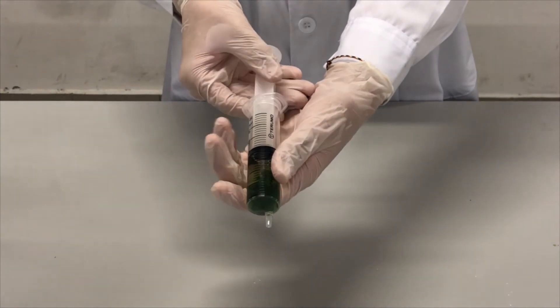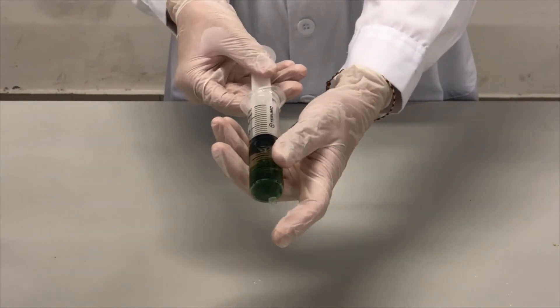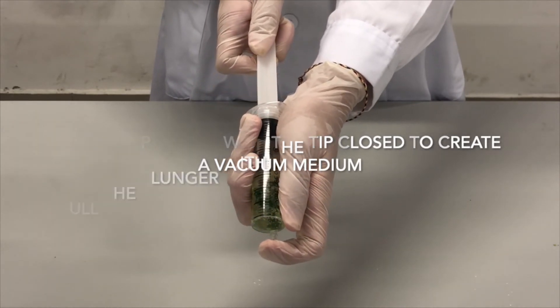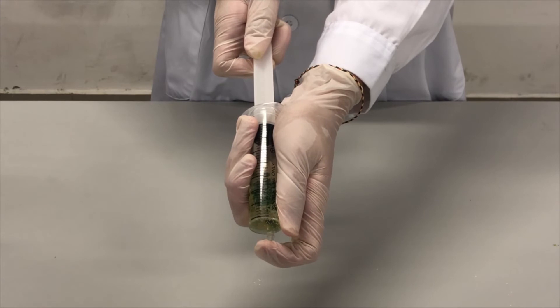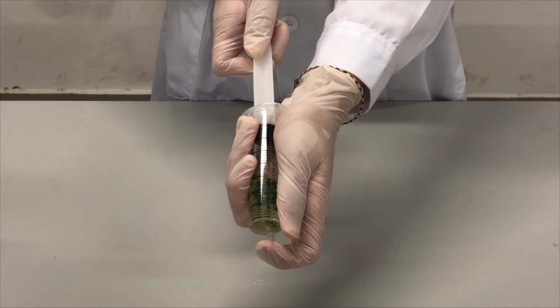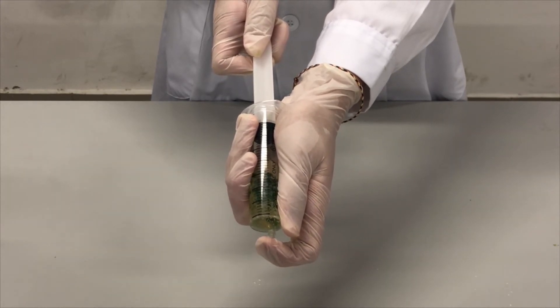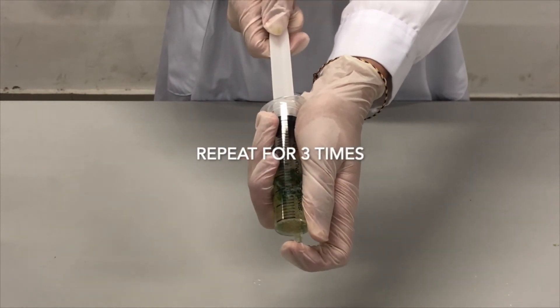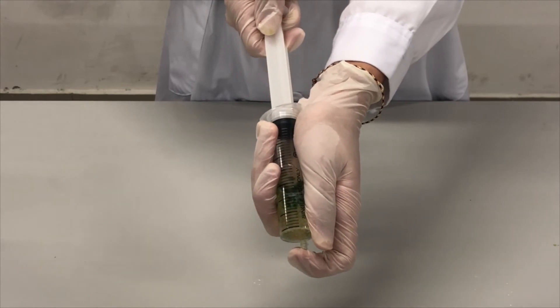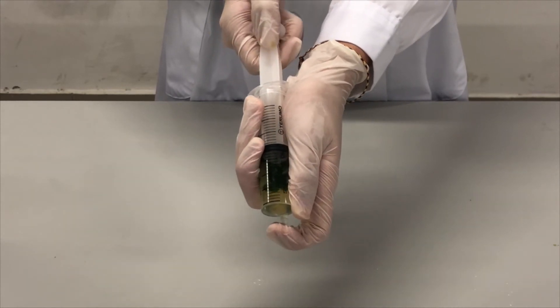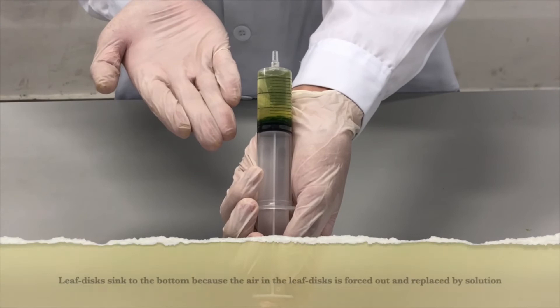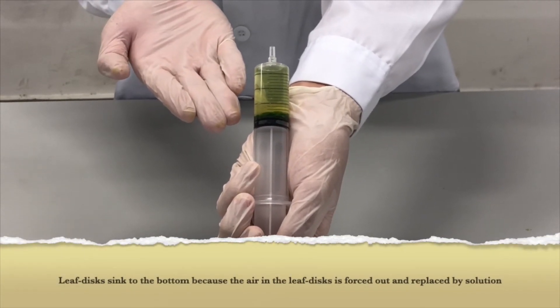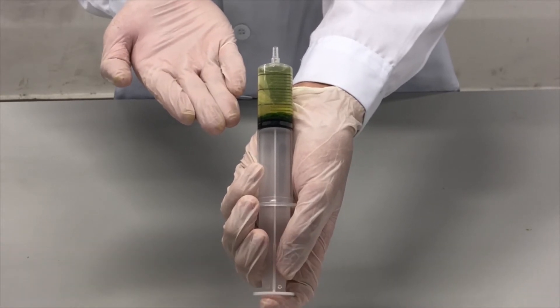Hold the syringe vertically with the tip pointed upwards and expel the air by gently pushing the plunger. Close the tip of the syringe with finger and pull the plunger to create a vacuum medium. The plunger is held in place for 10 seconds and release. Repeat this step for 3 times. The leaf disk will sink to the bottom because the air in the leaf disk is forced out and replaced with the solution when a great vacuum is applied.